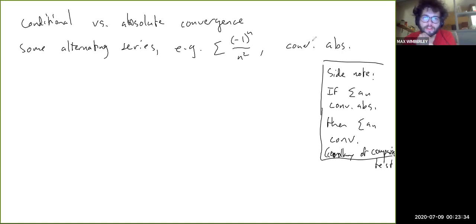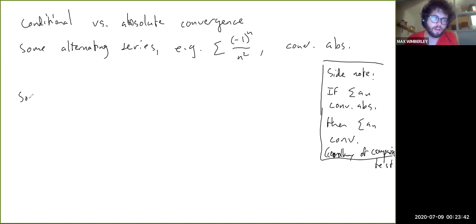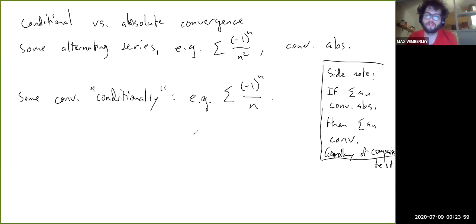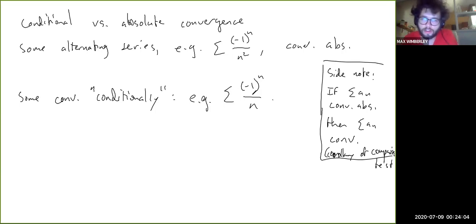Some alternating series converge without converging absolutely — that's what we call conditional convergence. For example, the sum of (-1)^n / n is the archetypal example of a conditionally convergent series.